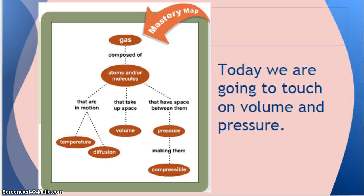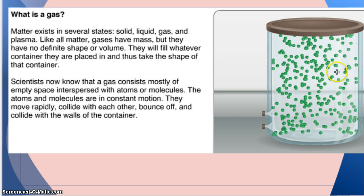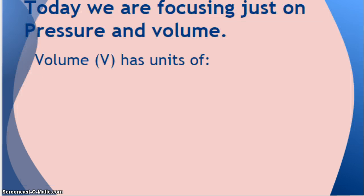So today we're going to touch specifically on volume and pressure. A gas is composed of atoms and/or molecules. They are in motion, which is where we're going to talk about temperature and diffusion. The gas is composed of atoms or molecules that take up space — anything that takes up space has volume. Gas molecules have space between them, which creates pressure, making them compressible. Because there's space in between, we can squeeze and force them closer together. So today we are focusing just on pressure and volume.